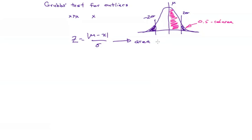So if this z value correspond to some much smaller area, then we'd say there's less chance that that was due to random chance. And we could reject the suspicious value with at least 95% confidence that was the right thing to do.